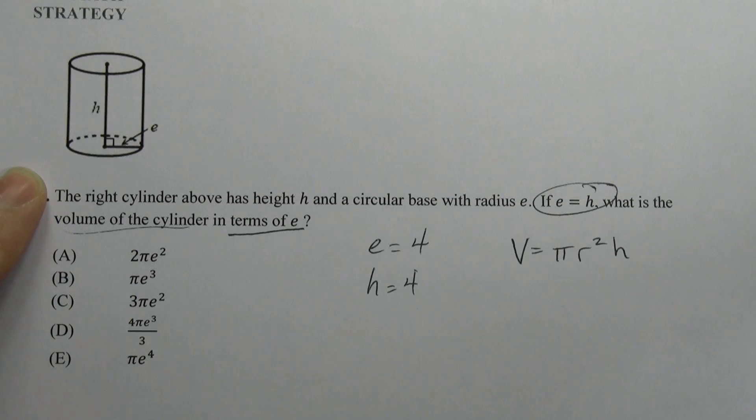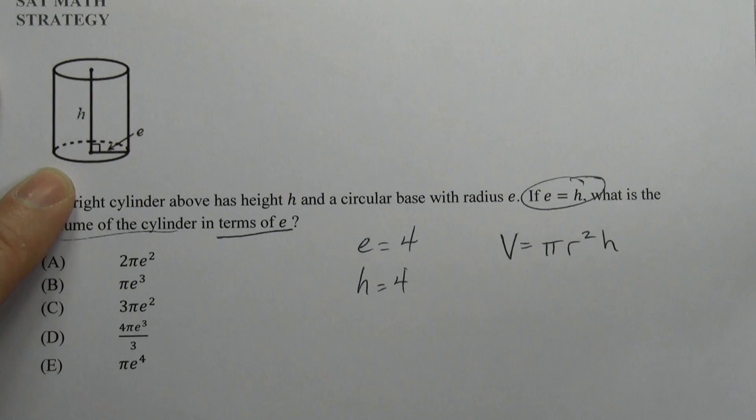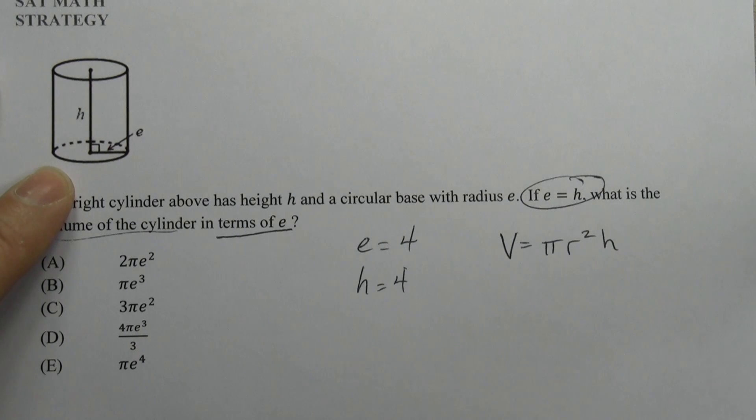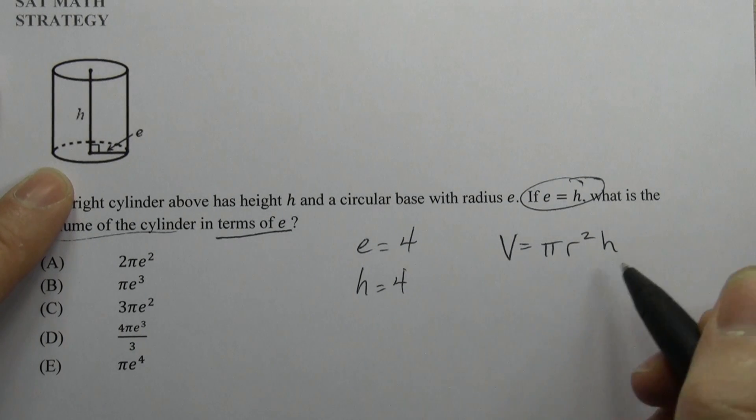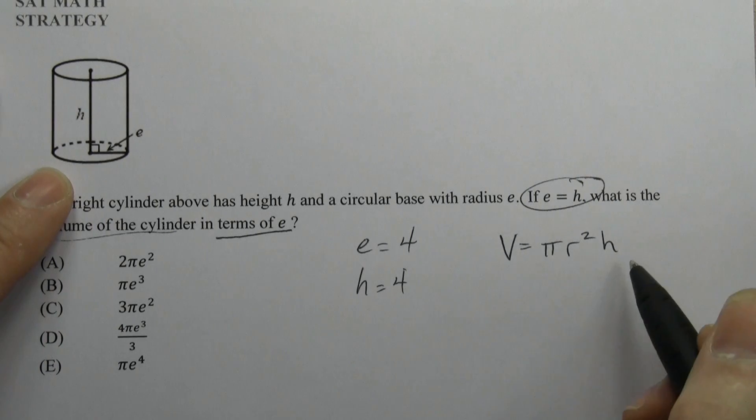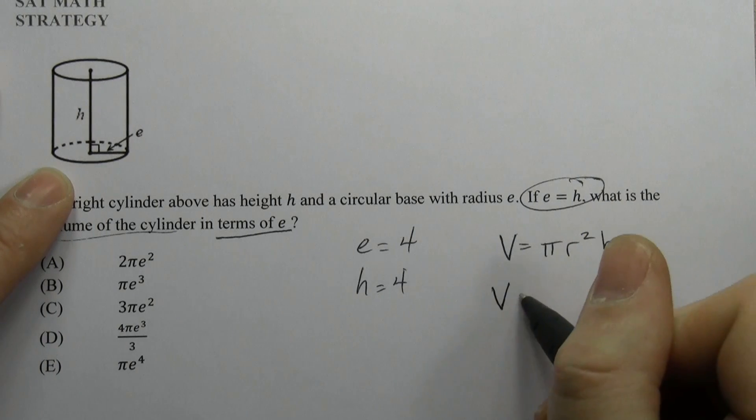Fortunately, this formula is at the beginning of every math section, so you don't have to have it memorized. I do recommend memorizing it, though. Anyway, π r² h. We have an h, so that's good news. We have 4 for the h.